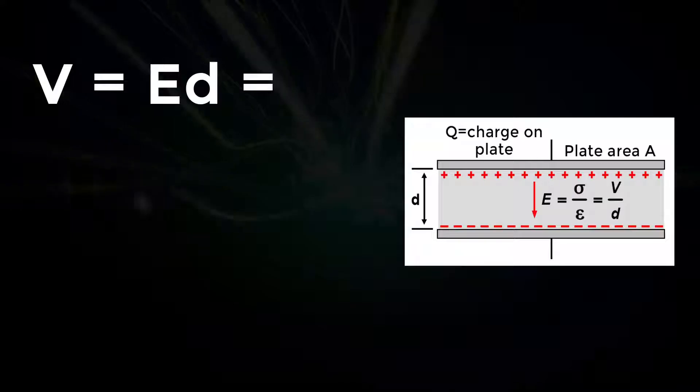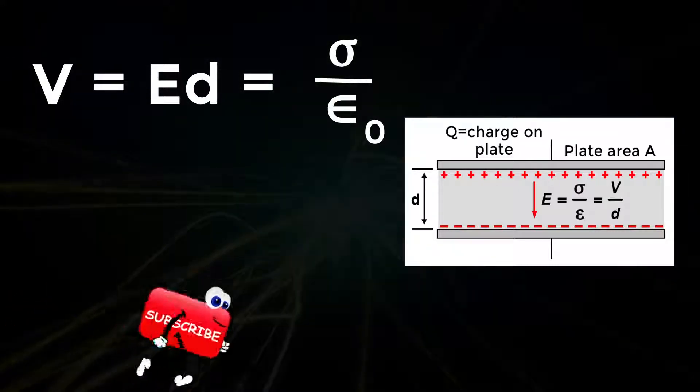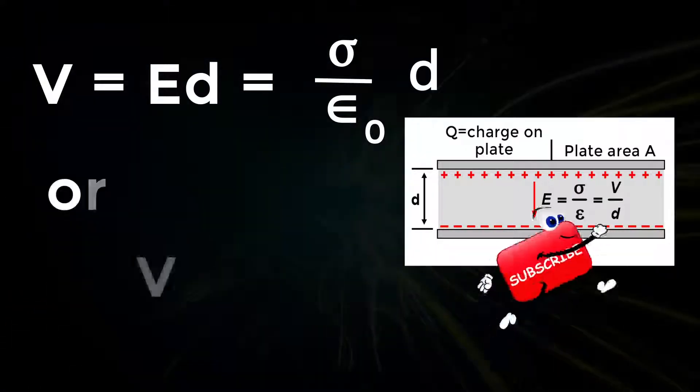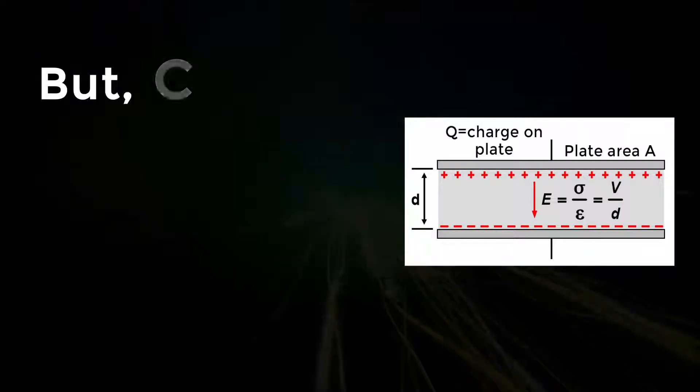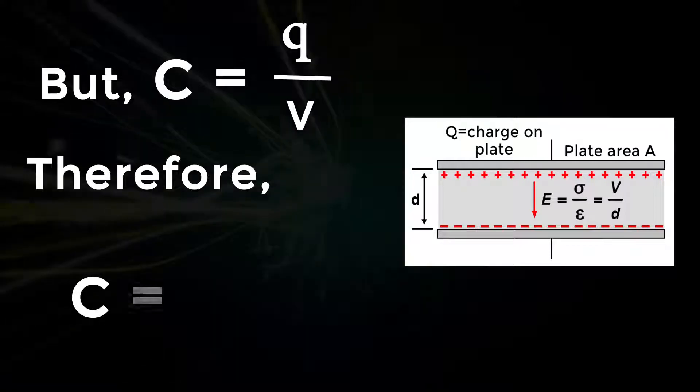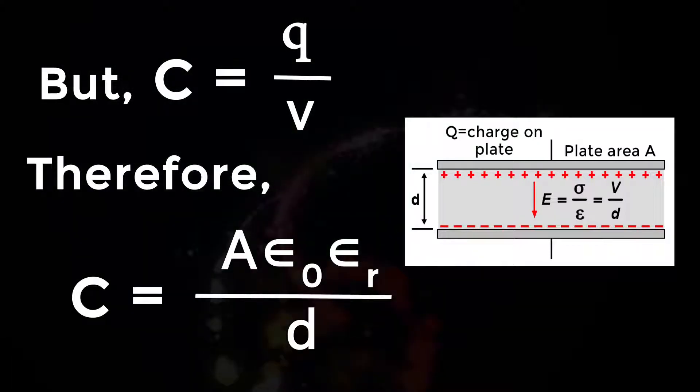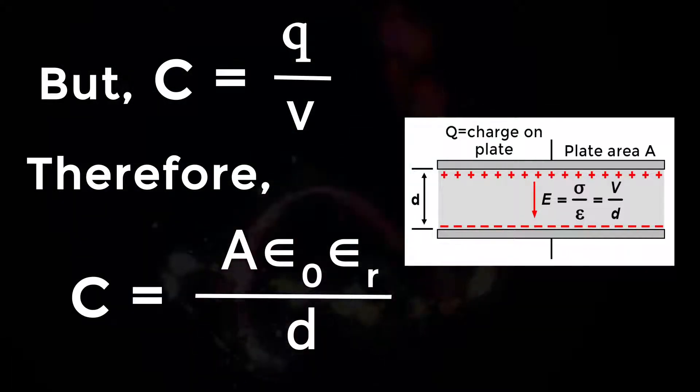V is equal to ED which is equal to sigma divided by epsilon naught D, or V is equal to QD by A epsilon naught. But C is equal to Q by V, therefore C is equal to A epsilon naught epsilon R divided by D.